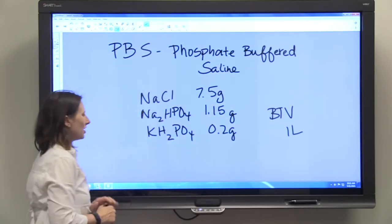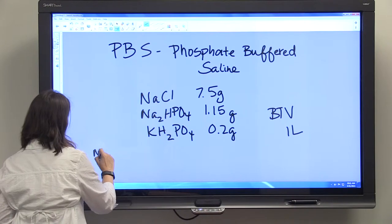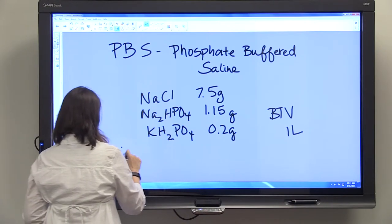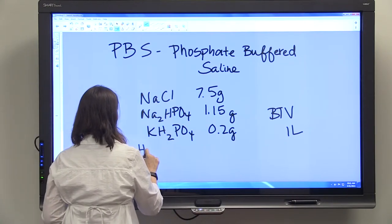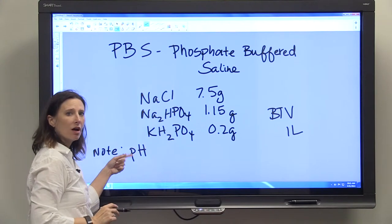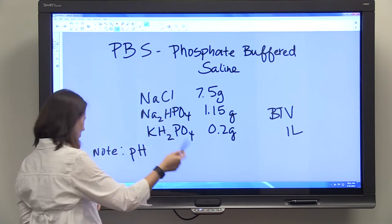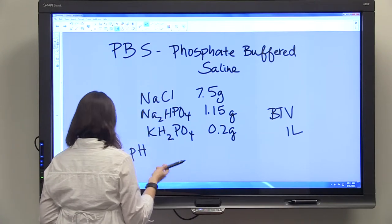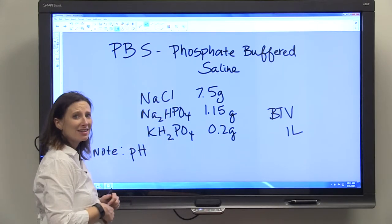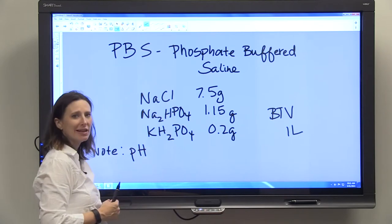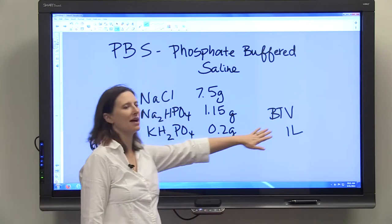Another note is that sometimes for a PBS you may be asked for a particular pH of the solution. What you'd have to do is make up a partial volume and bring it over to your pH meter and add either acid or base to get it to the right pH.